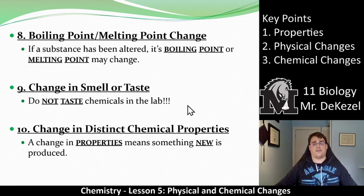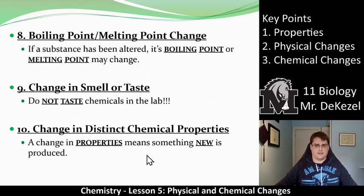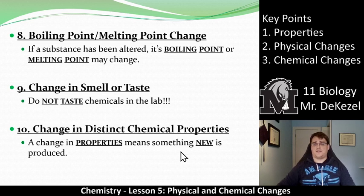It's all about the properties. Are the properties the same in the beginning as they are in the end? Number nine: if there's a change in smell or taste, that means you have a chemical change — but a reminder not to taste or smell the chemicals in the lab. Number ten: if you have a change in distinct chemical properties — so if it reacts with acid but after the change it doesn't react with acid, that would be a chemical change. The properties about it are different. So again, if the properties change, it's a chemical change; if they do not, it is a physical change.